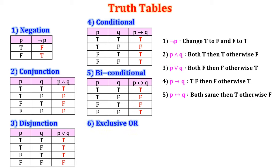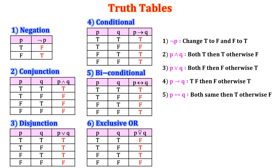6. Exclusive OR. Here also we have two statements P and Q and four possibilities. The exclusive OR is denoted as P XOR Q. The condition is: if both are same then the answer is false, otherwise true. So TT and FF give false, while TF and FT give true.